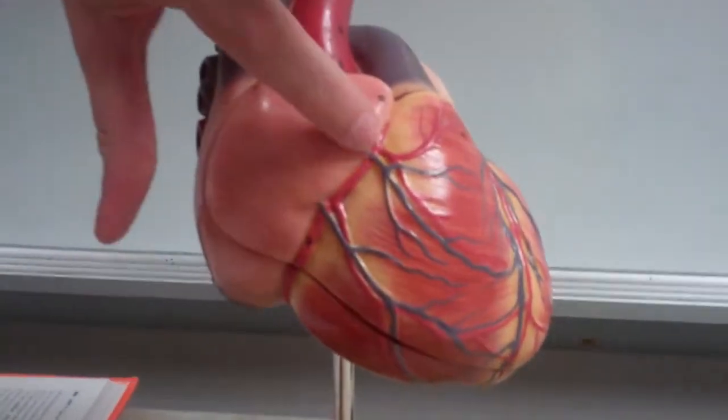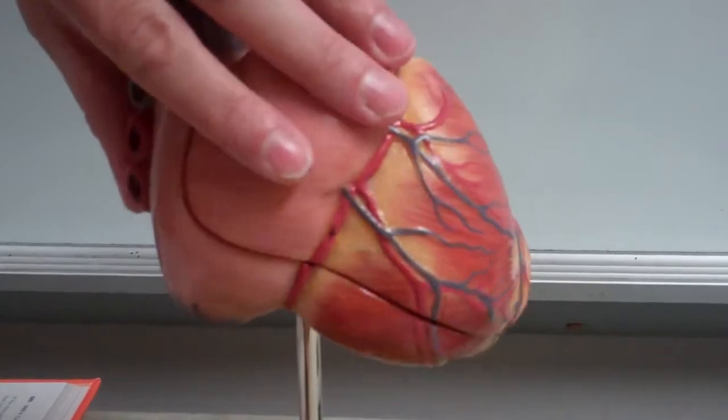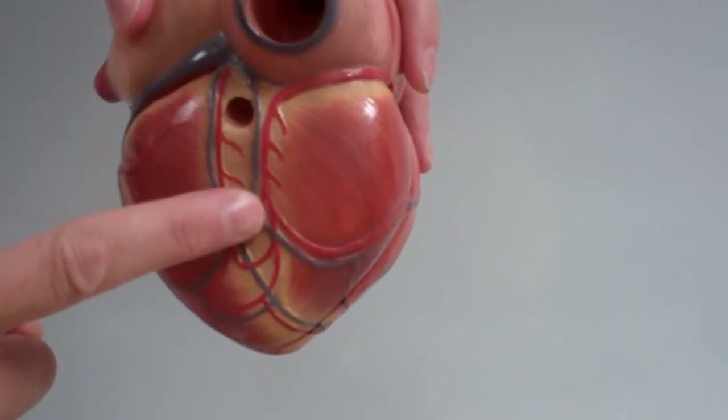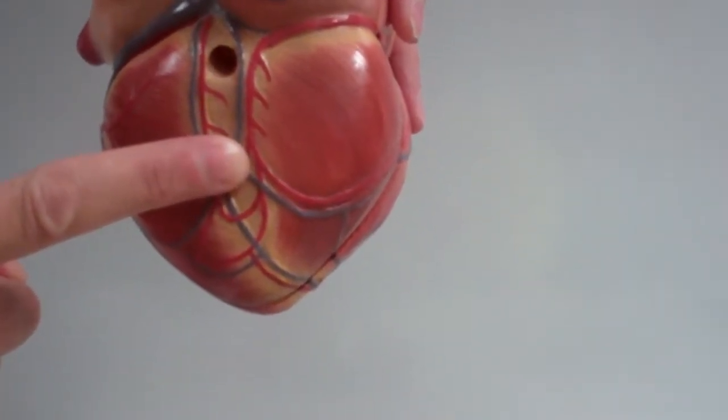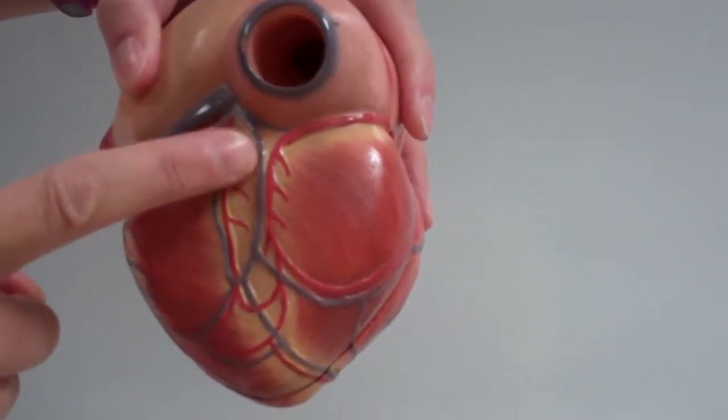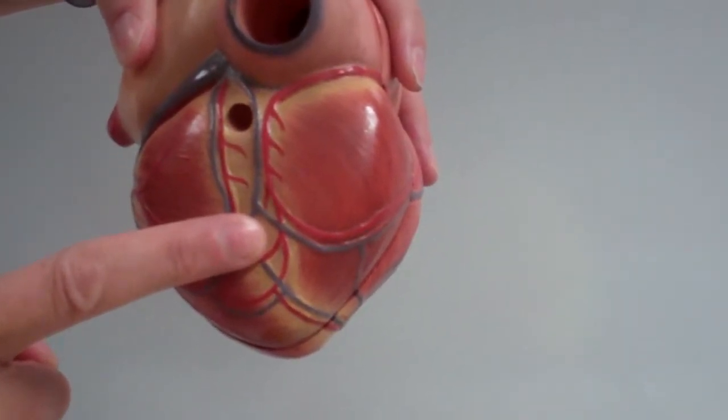Your right coronary is going to run all the way through this sulcus towards the back. When we look in, the right coronary is then going to dive down into the posterior interventricular sulcus, and at that point, we start to call the vessel the posterior interventricular artery.